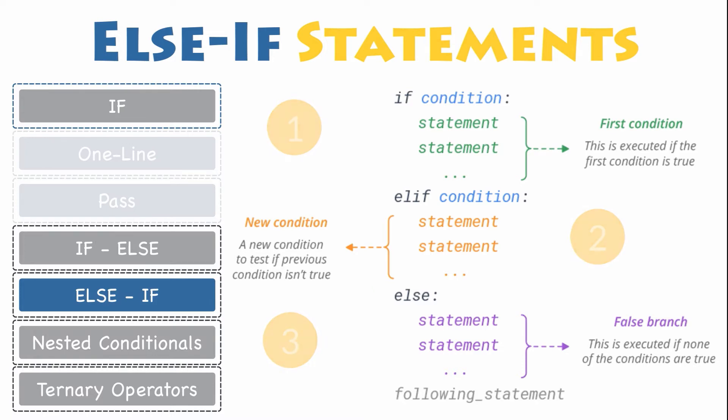Each condition is checked in order. If the first is false, the next is checked. If the second is false, the next is checked, and so on. If one of them is true, the corresponding branch executes and the statement ends.